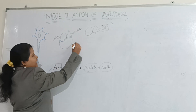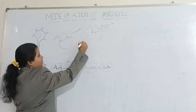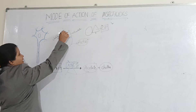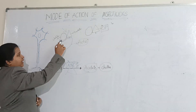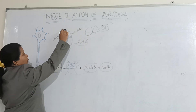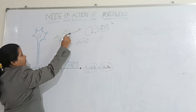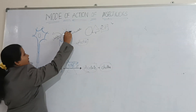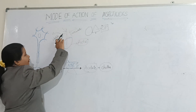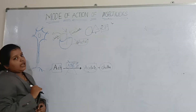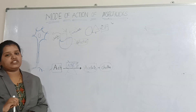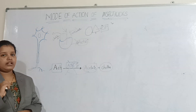Here you can see this is the enzyme acetylcholinesterase and this is the natural acetylcholine which will bind to the receptor of this acetylcholinesterase. After binding, this acetylcholine will break into acetate and choline and both will get disintegrated. The enzyme will then be free to bind to another molecule of acetylcholine.